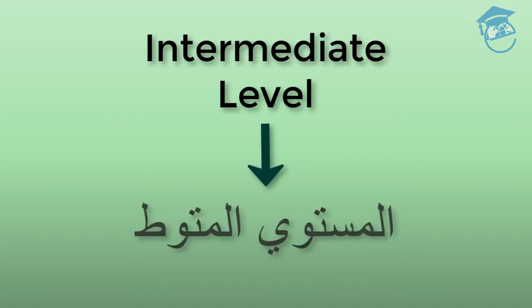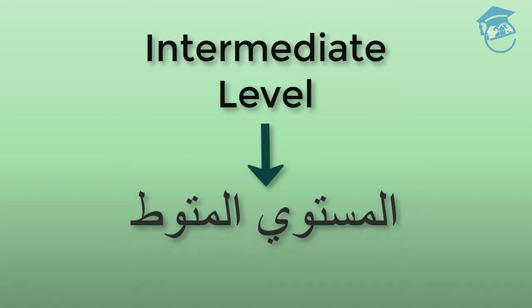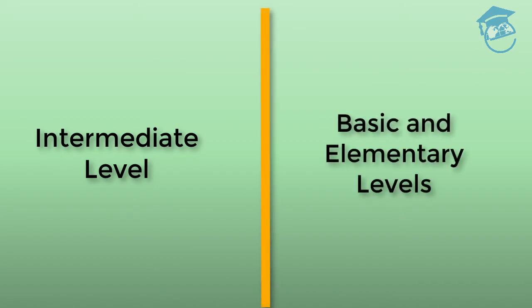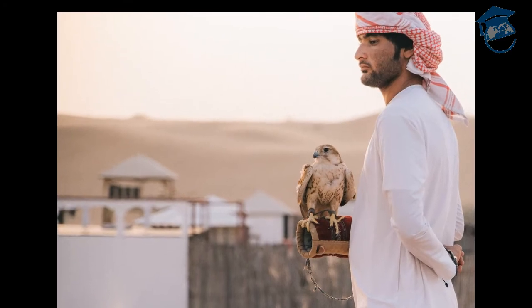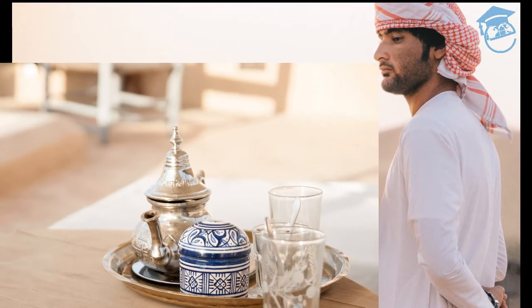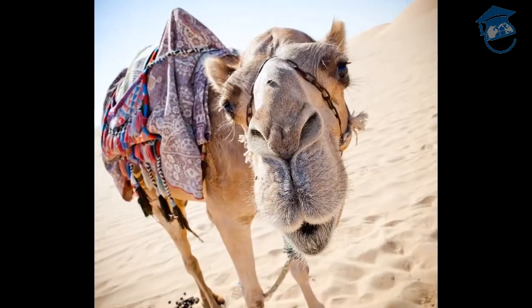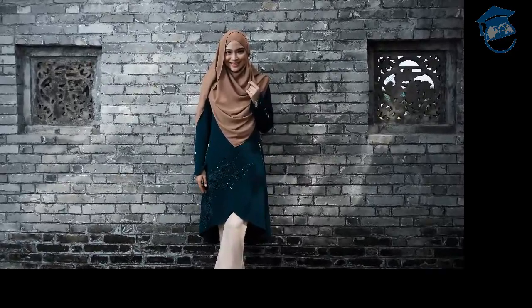Now you're ready to begin the intermediate level, El-Mustoah el-Mutawasat. The intermediate level is quite different from the basic and elementary levels. Of course, you will continue to acquire new vocabulary — in Arabic, this is a task which will continue as long as you study the language. The Arabic language is rich in vocabulary; for example, Arabic has 11 words for love and hundreds of words for camel. You will never stop finding new words to learn and memorize.